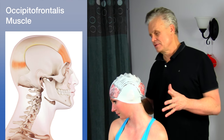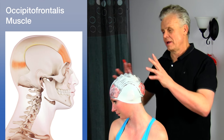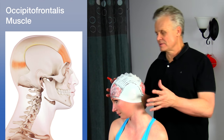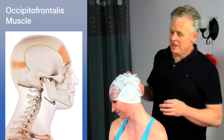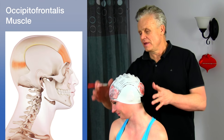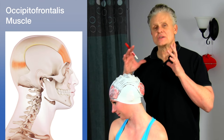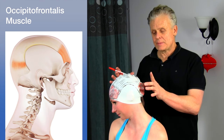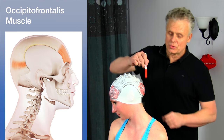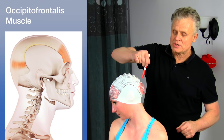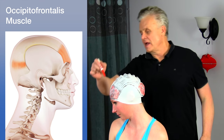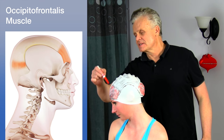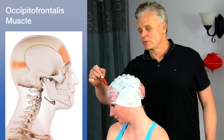Mickey was nice enough to shave her head — just kidding. This muscle has two bellies: one is the occipital region, the red area posteriorly, and the frontalis, the front here, also shown in red.